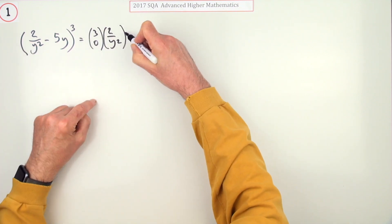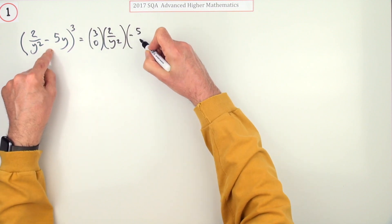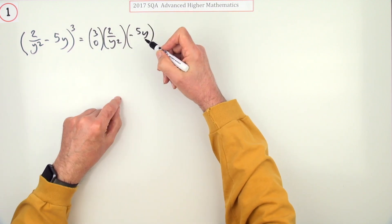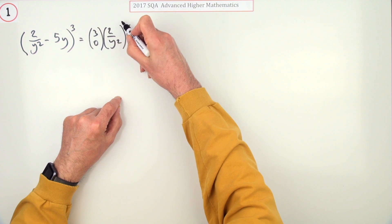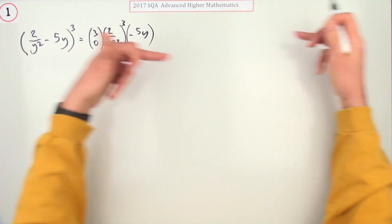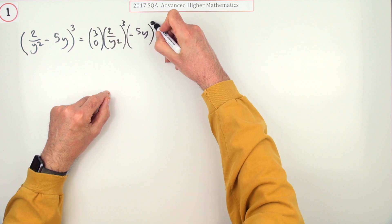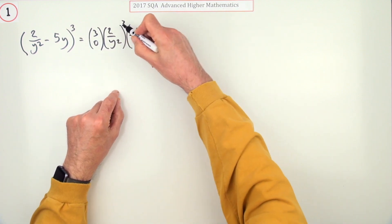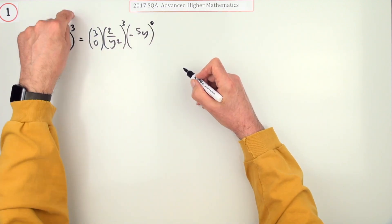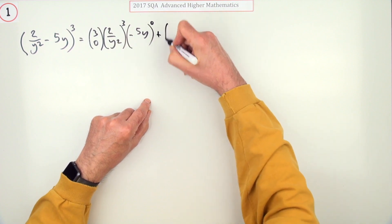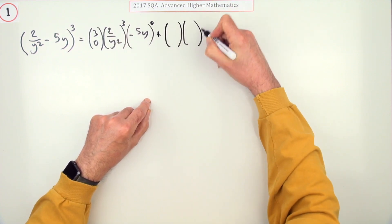It is symmetrical, so you can start from either end. This can start at power three and that can start at power zero. The powers always add up to whatever this is—three. Now it's just a case of putting the same things down.